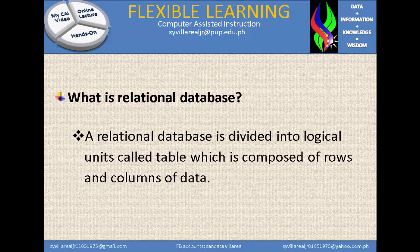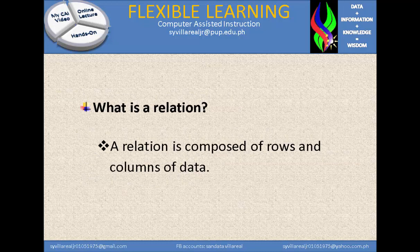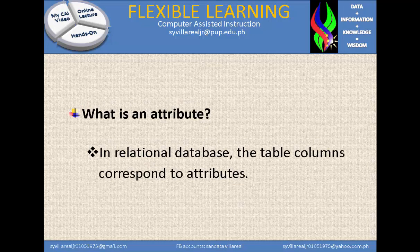Next, what is a relational database? A relational database is divided into logical units called tables, which are composed of rows and columns of data. What is a relation? A relation is composed of rows and columns of data. What is an attribute? In the relational database, the table columns correspond to attributes.